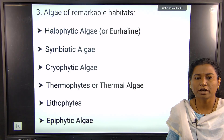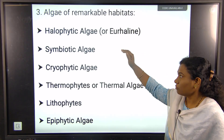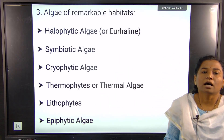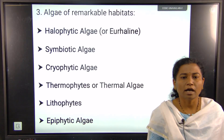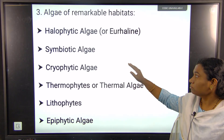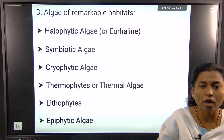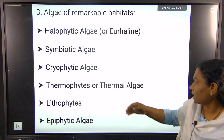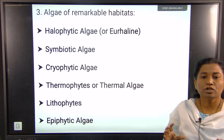Apart from aquatic freshwater, marine, and terrestrial forms, algae are found in remarkable habitats. Halophytic algae are obtained from saline environments. Symbiotic algae are found in association with fungi, bryophytes, gymnosperms, and angiosperms. When algae have a symbiotic association with fungi, they are specifically called lichens. With gymnosperms, Anabaena alga is associated with the coralloid roots. Cryptophytic algae are generally associated with rocks.